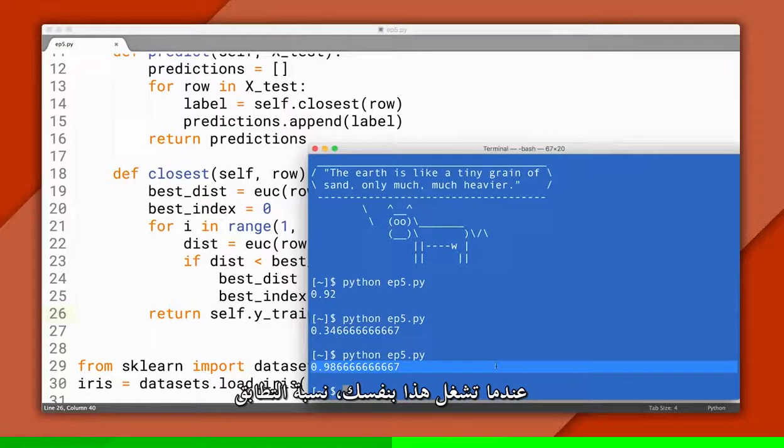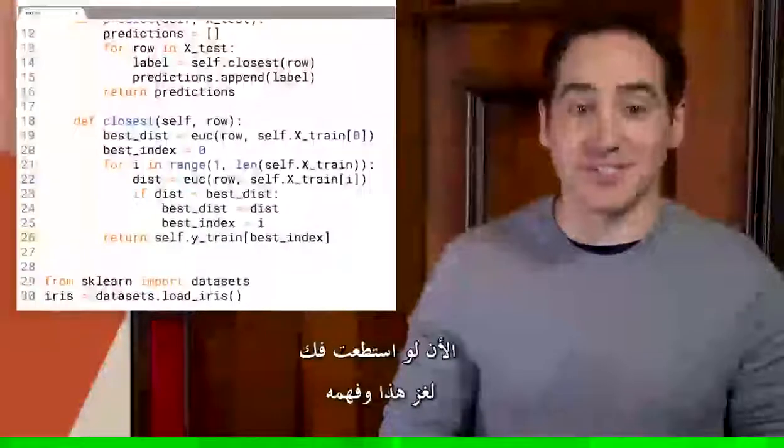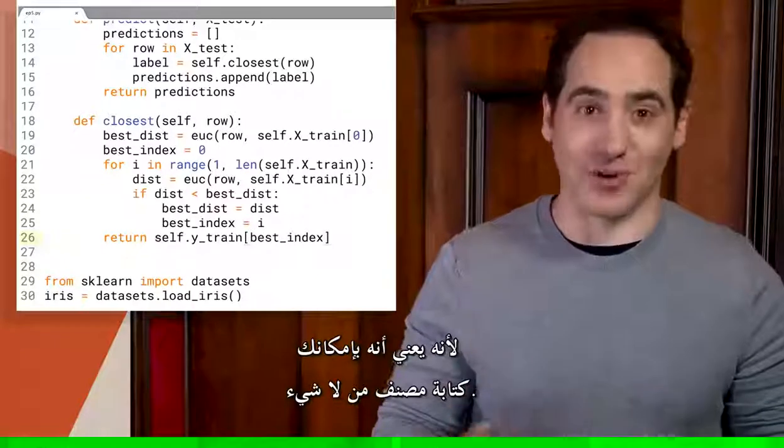When you run this on your own, the accuracy might be a bit different, because of randomness in the train test split. Now, if you can code this up and understand it, that's a big accomplishment, because it means you can write a simple classifier from scratch.